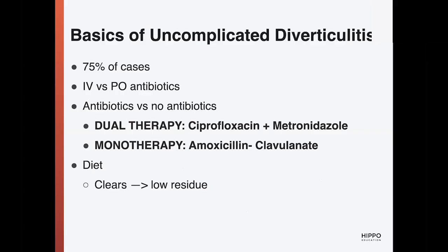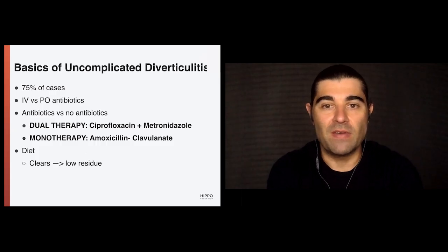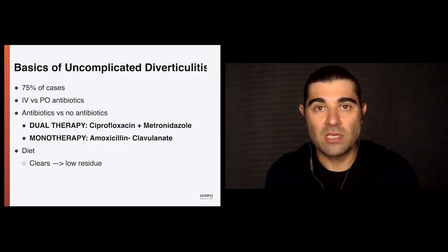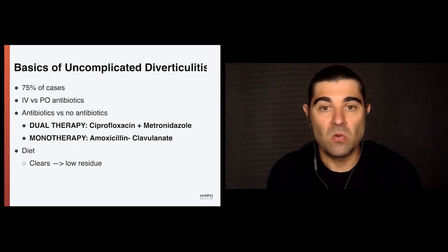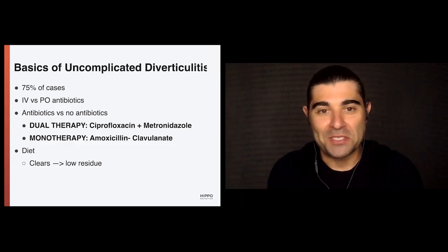Uncomplicated diverticulitis accounts for about 75 percent of cases and most can be managed as outpatients. RCTs have failed to show a benefit of IV over oral antibiotics — so starting IV and transitioning to oral, or just starting oral, shows no significant difference. One of the most interesting findings is that trials haven't shown any clear benefit to antibiotics versus no antibiotics in uncomplicated diverticulitis.